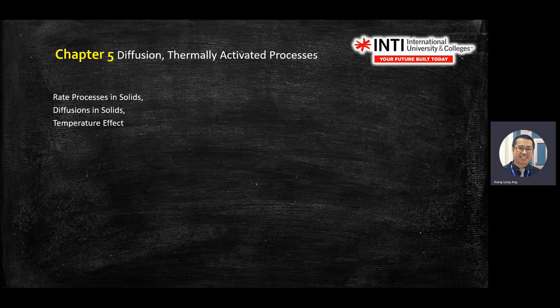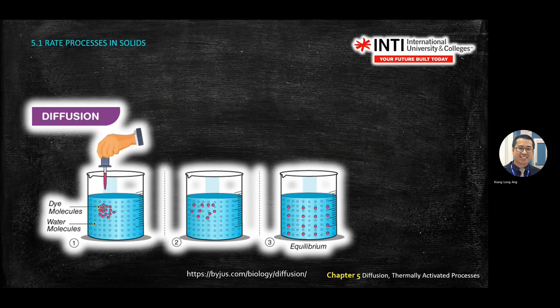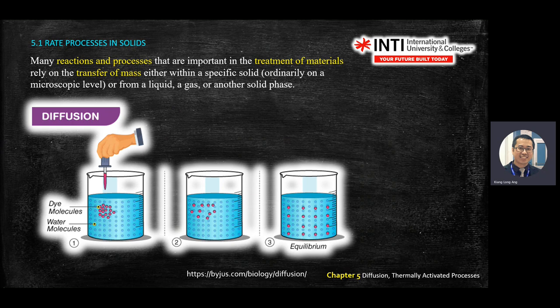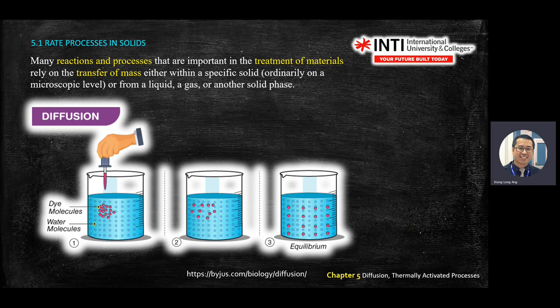Today we focus on Chapter 5: diffusion. Diffusion is a mixing between two elements, and we will look at it in the solid phase. The key word for diffusion is the transfer of mass. It's very important when we talk about treatment of material. By the end of this module, you should be able to answer questions like how you strengthen a material — one of the methods is through diffusion.